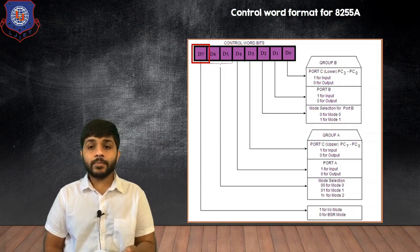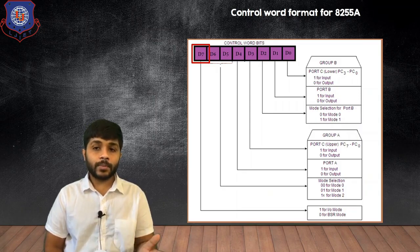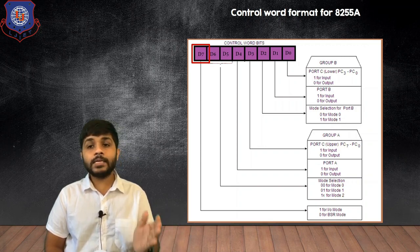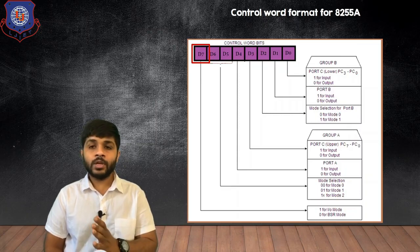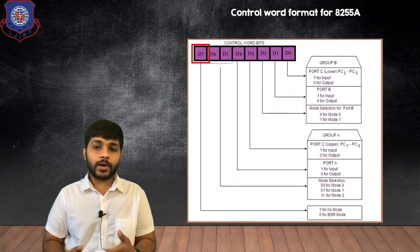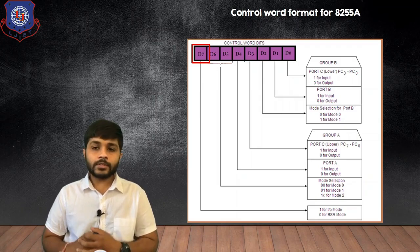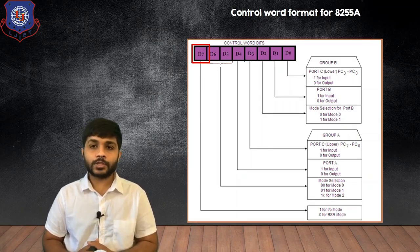The D7 bit specifies one mode from the two available basic modes. If D7 is 1, the 8255A works in input-output mode; if D7 is 0, it works in bit-set-reset mode. This is how the 8255A works. If you still have any doubts, you can ask in the comment section. Thank you so much.